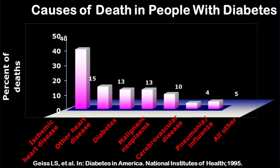Looking at this slide on the causes of death in people with diabetes, you can see that the majority of cases — more than 40% — is because of ischemic heart disease. Other heart disease contributes around 15%.